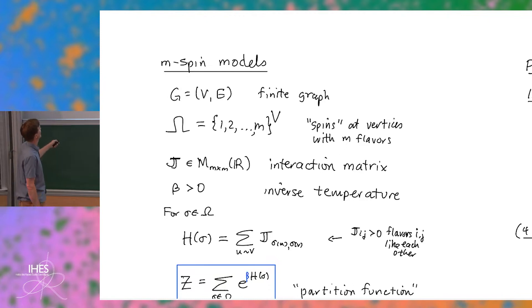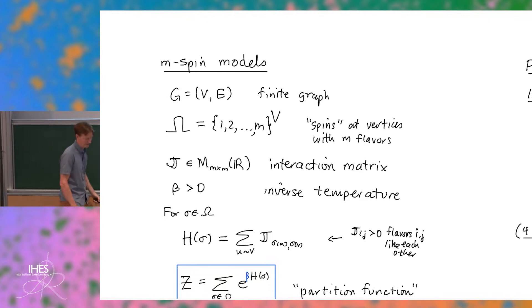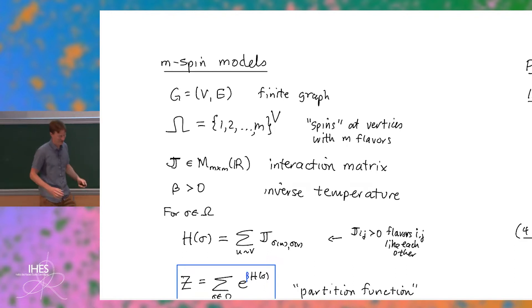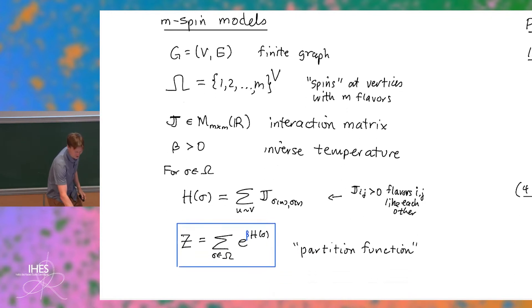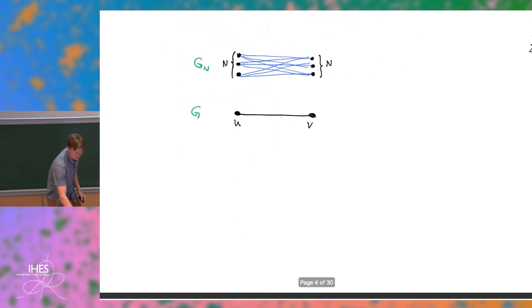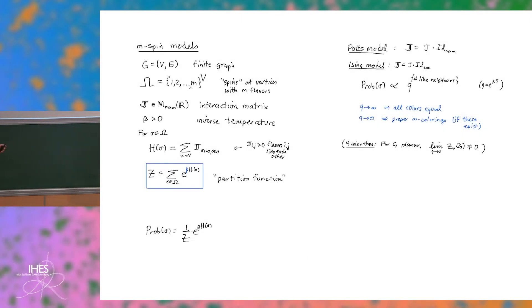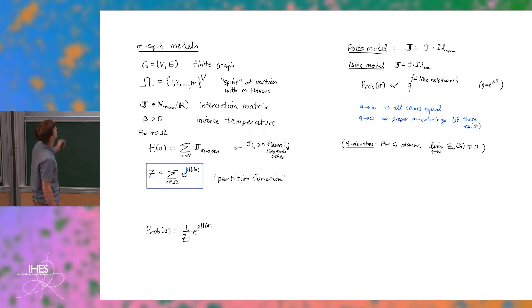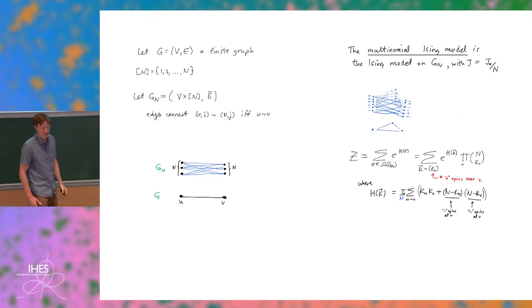Since I was giving this talk to non-physicists, I threw out both minus signs. The Potts model has interaction matrix j times the identity. For the Ising model it's a two-by-two matrix with two colors. That's the setup — nearest neighbor, but you can generalize however you like.